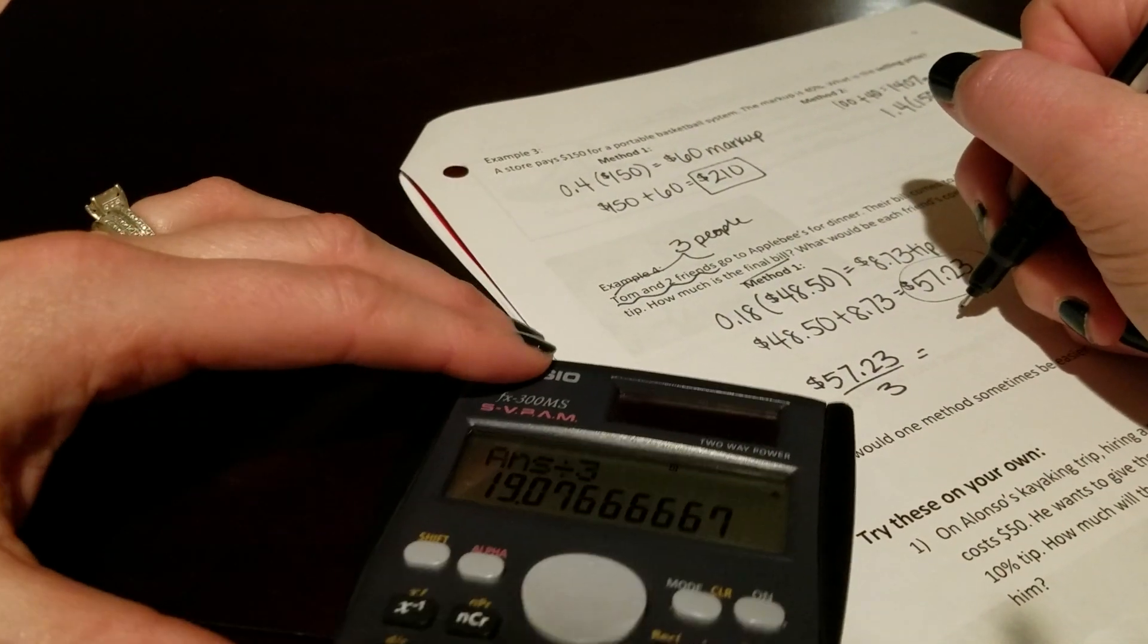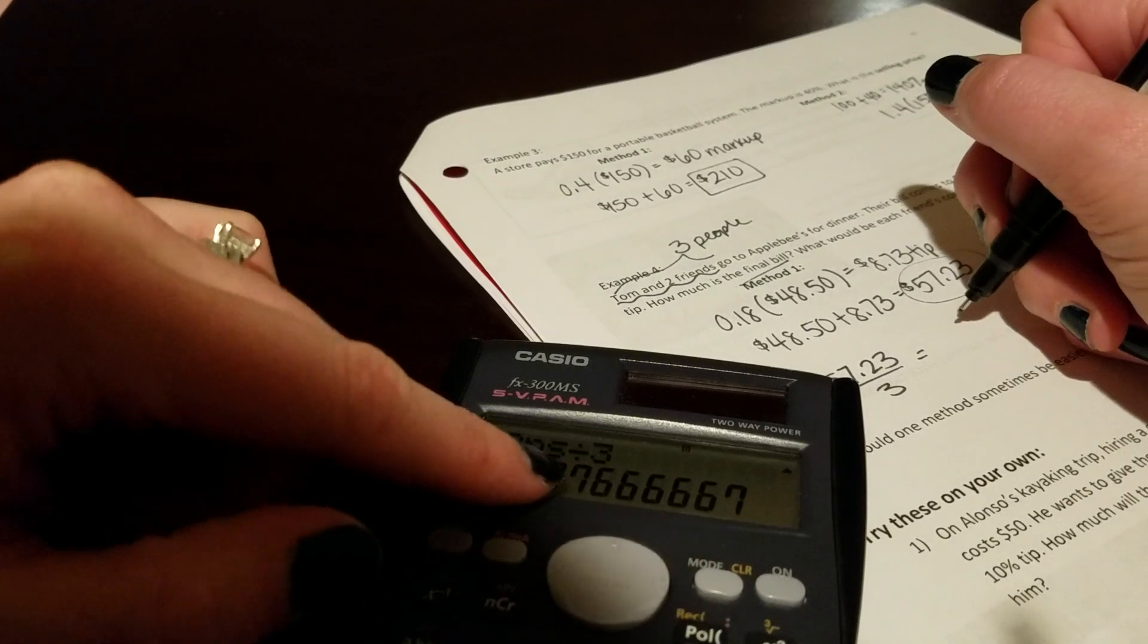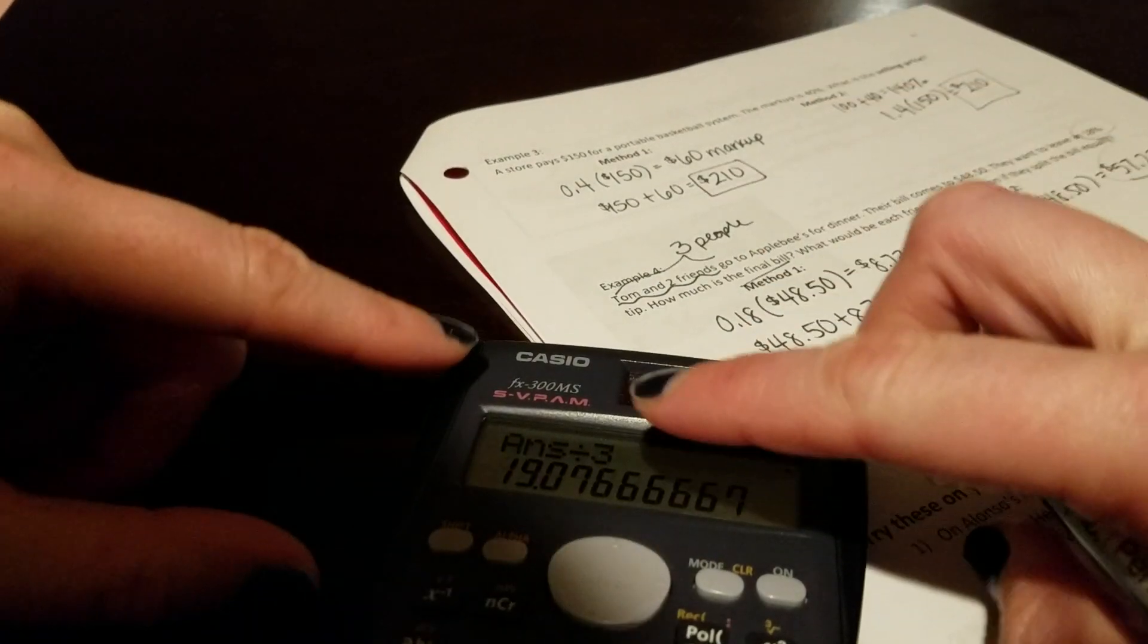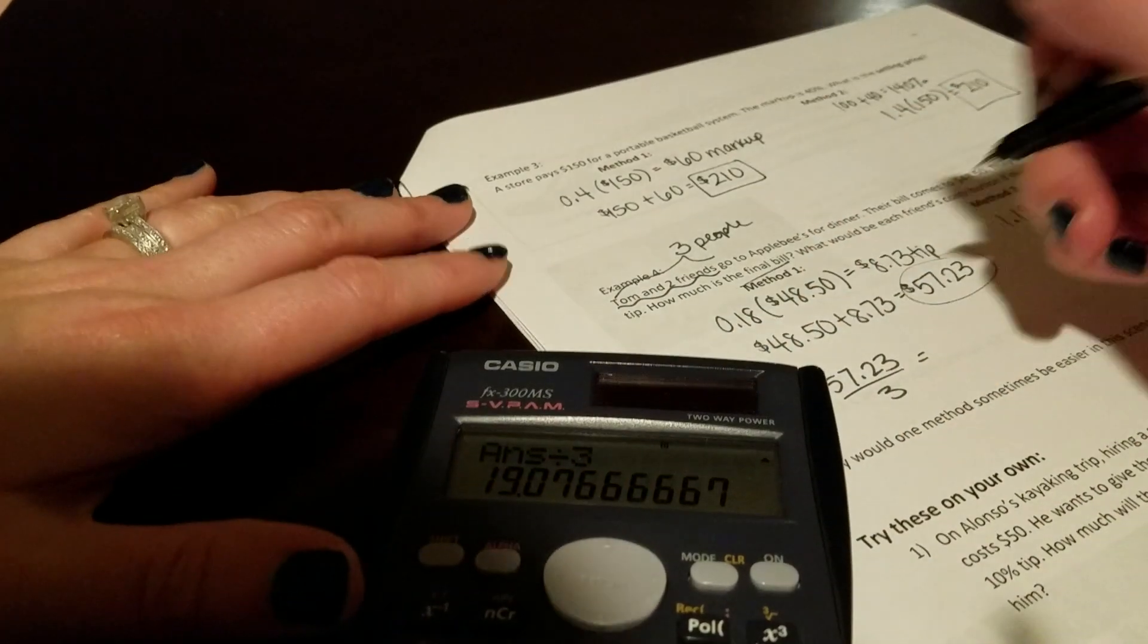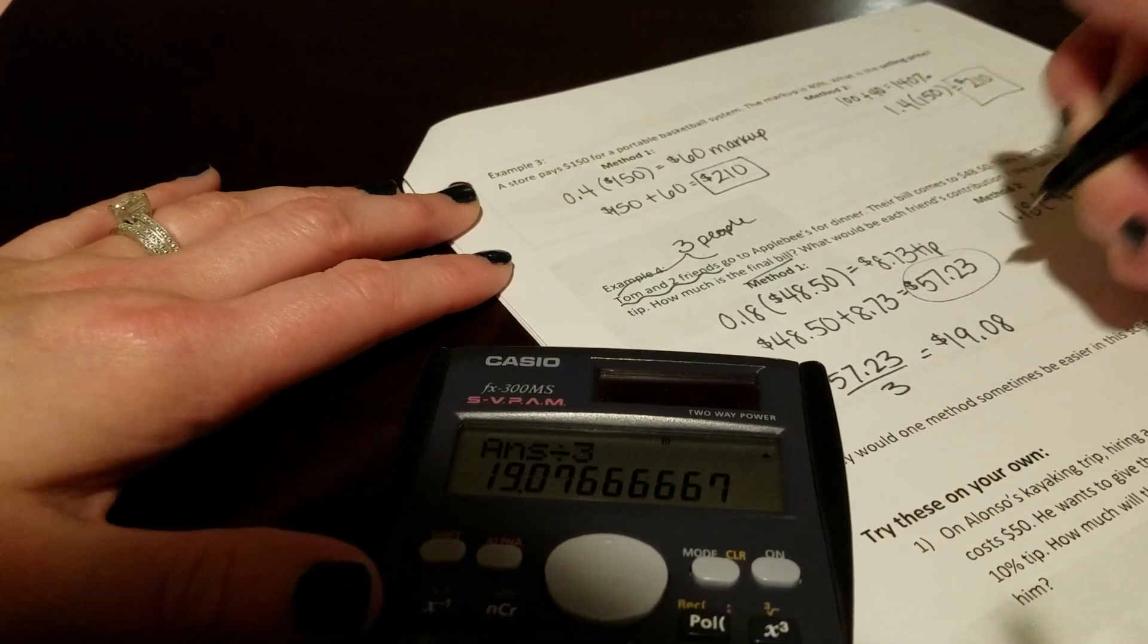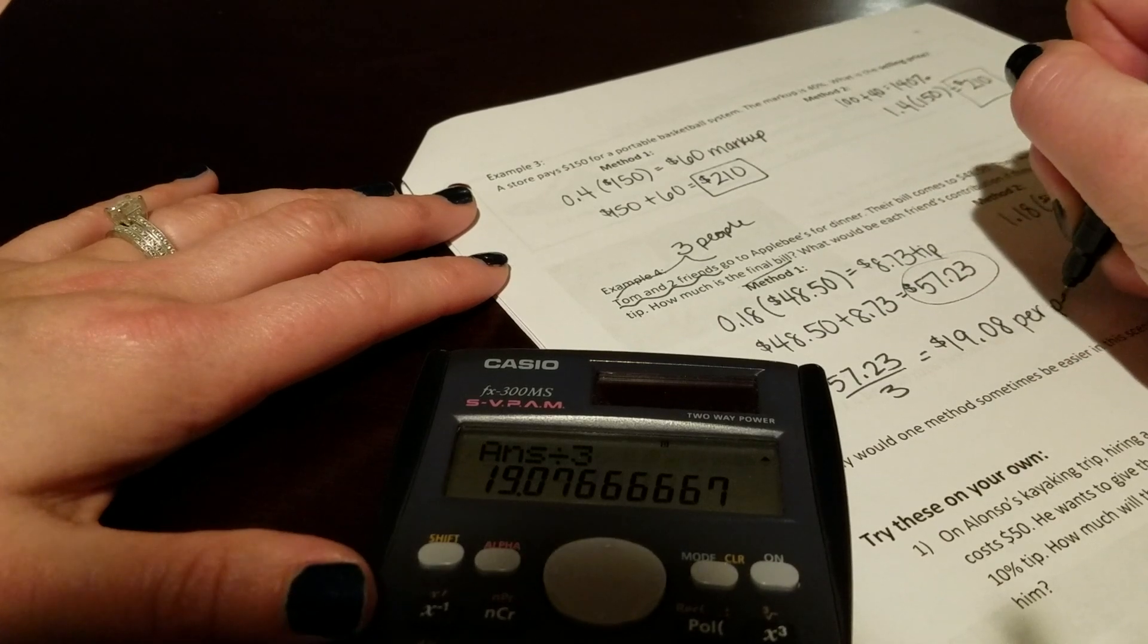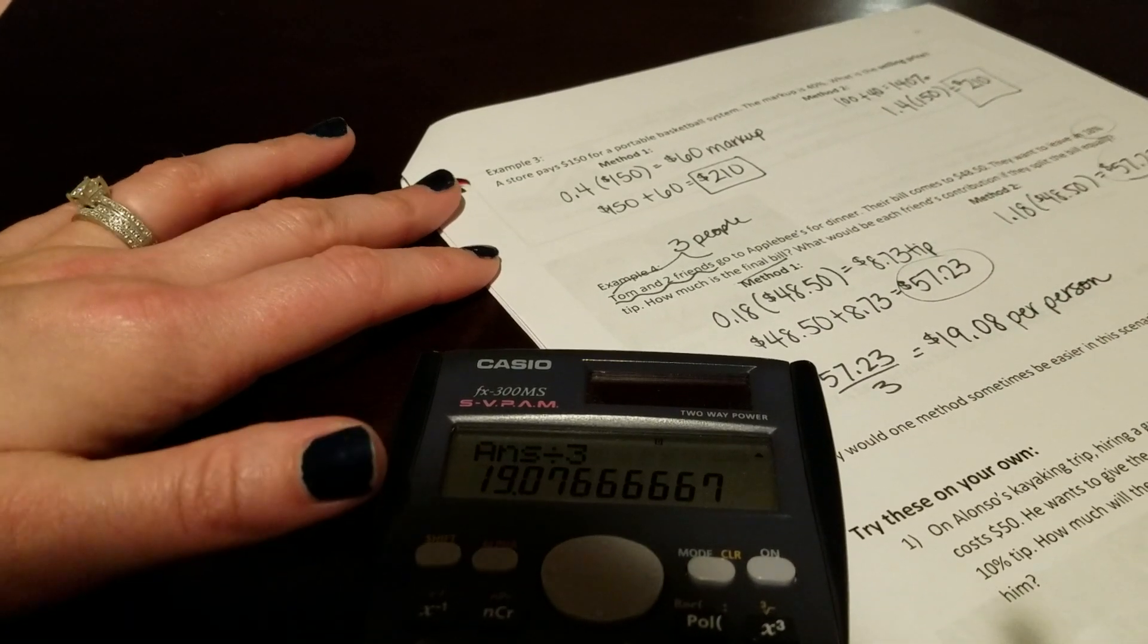So we'd basically take the bill and divide it by three. So each person, if I look at this on my calculator, 19.076. So the 07 is where I'm going to stop, but the 6 tells me I have to round up to $19.08 per person.